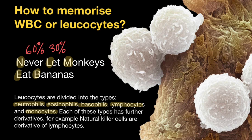Next, M stands for monocytes, which make up 6%. Then E stands for eosinophils, which make up 3%. And the last one, B in 'Bananas,' stands for basophils, which make up 1%.